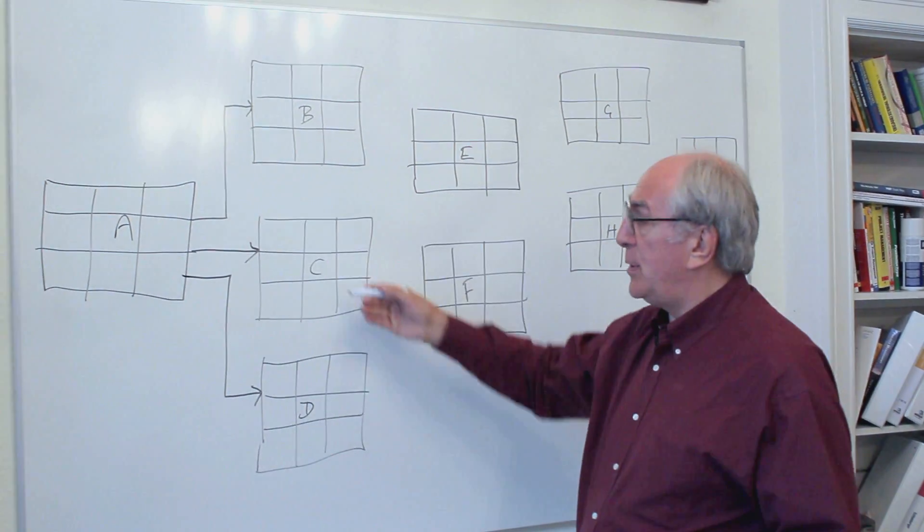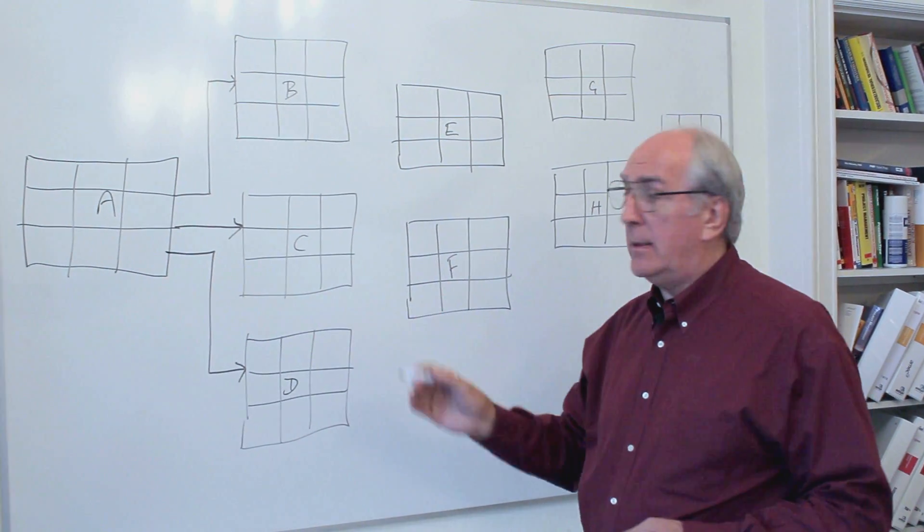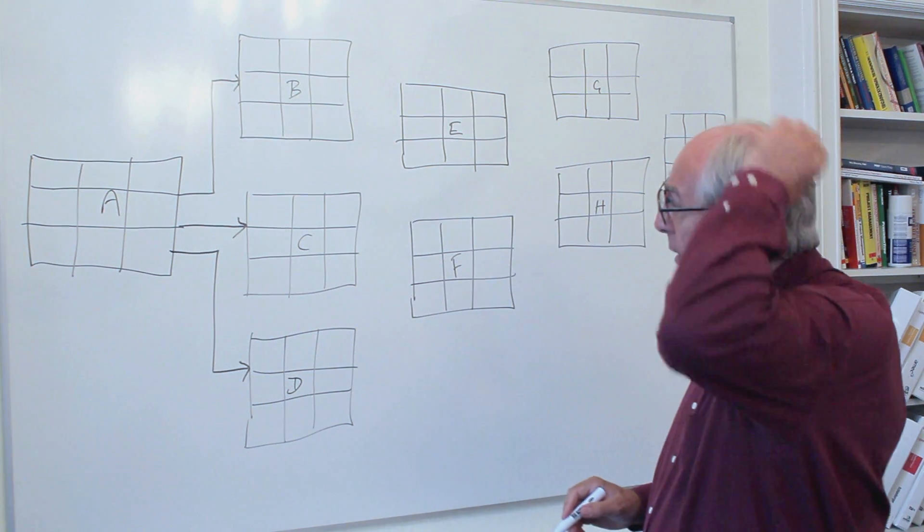And D cannot start until A is completed. Now, there's no relationship between B, C, and D. There's just a relationship between A and B, A and C, and A and D. That's how that works.